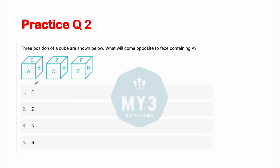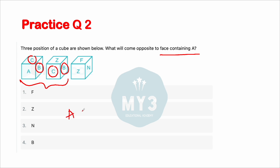Let's take another question: three different orientations of a die are given — what is opposite to A? Observe dice one and dice two: C and B are common. When two faces are common, the leftover terms act as opposites. So opposite to A is Z.